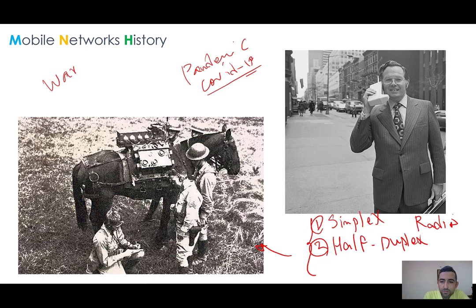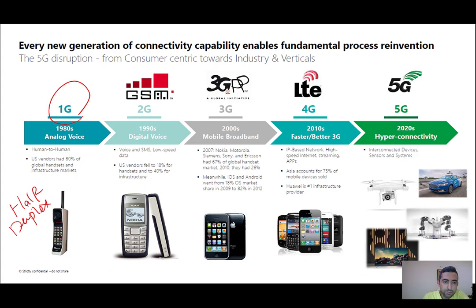Full duplex, which mobile communication is an example of, is bi-directional communication. Mobile phones in the 1G era were also very large devices. Then in the 1990s we had 2G — digital voice — and for the first time SMS (Short Message Service) was introduced. We also had data on circuit switch, but the data speed was very low — almost nothing — at 9.6 kilobits per second.